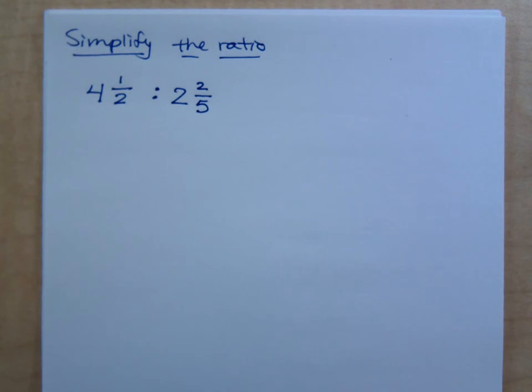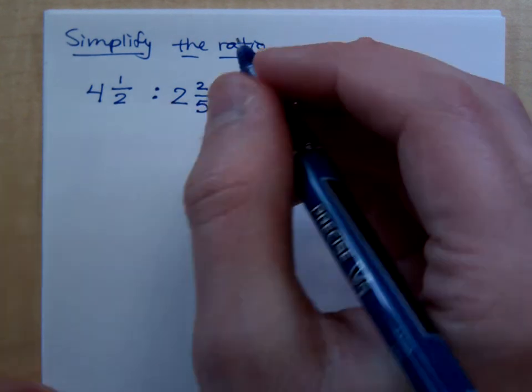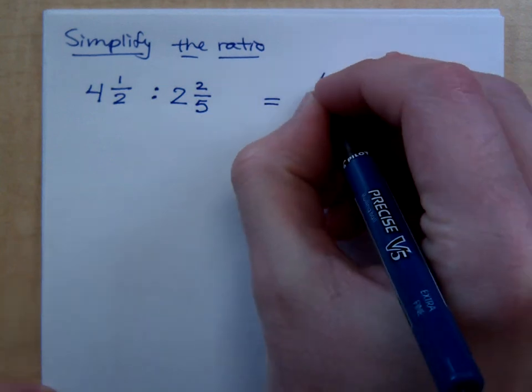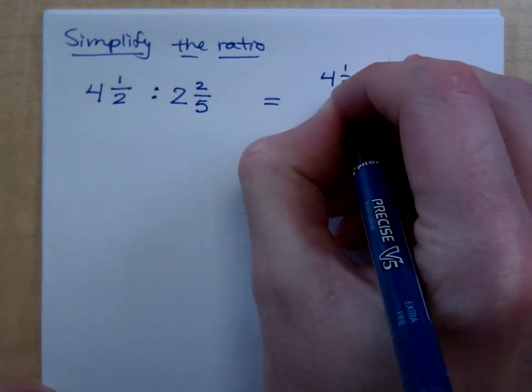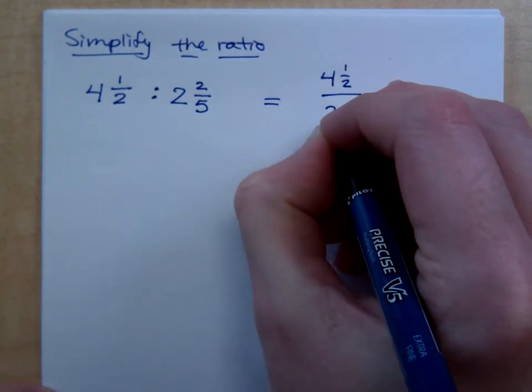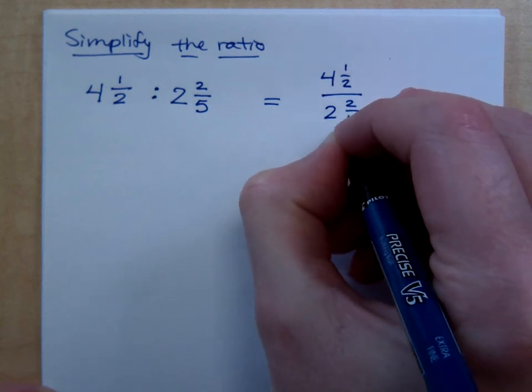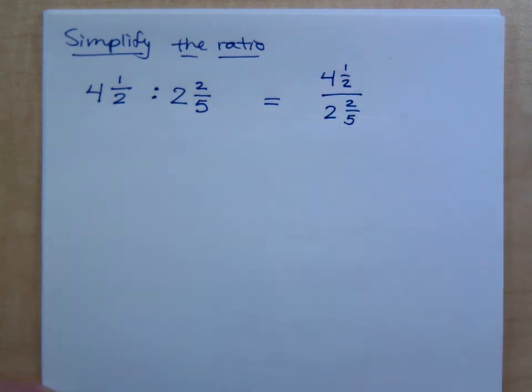So we want to simplify this ratio, 4½ to 2⅖. Now, if we remember what this means, we could see this as 4½ divided by 2⅖, right? So this is really a division problem. That's what these ratios are. It's all about division.